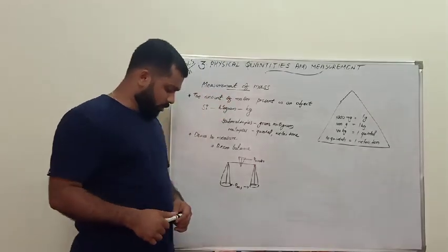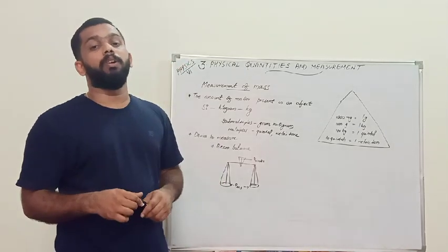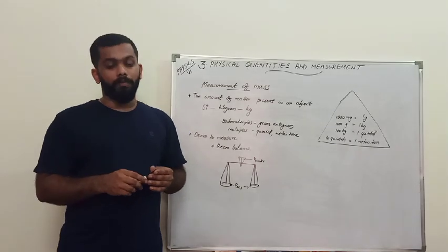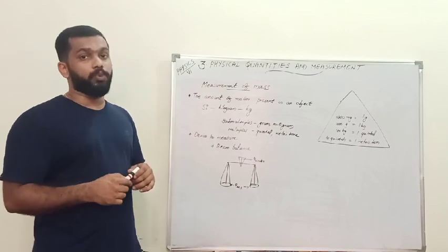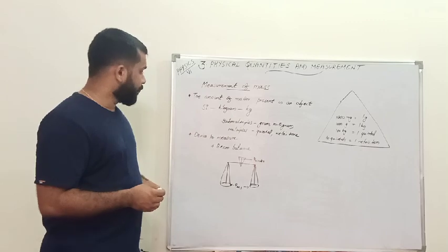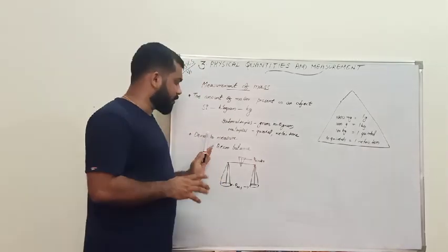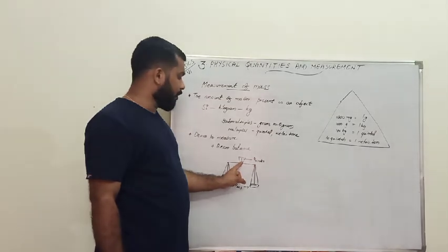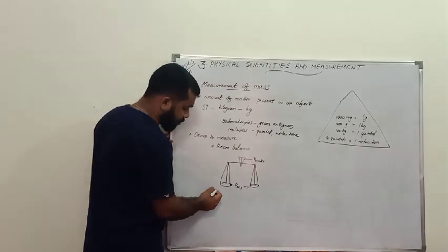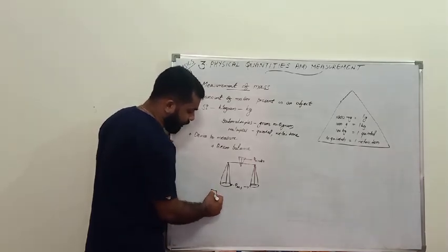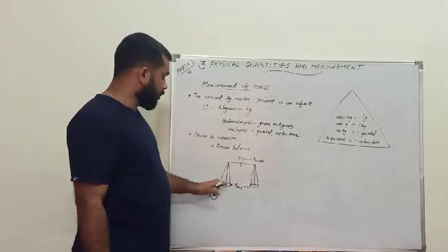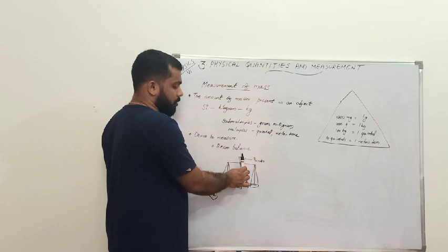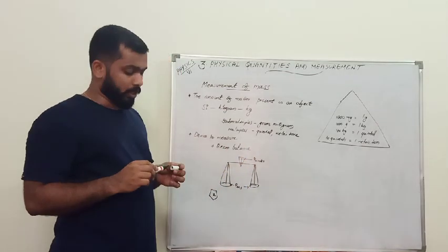The common device for measuring mass is the beam balance, which you see with shopkeepers. It has two pans and a central pointer. On one side, you keep standard iron weight pieces labeled one kilogram, two kilograms, and so on. On the other side, you add the vegetable or object. When both pans are at the same level and the pointer is vertical, you get the correct measurement of mass.